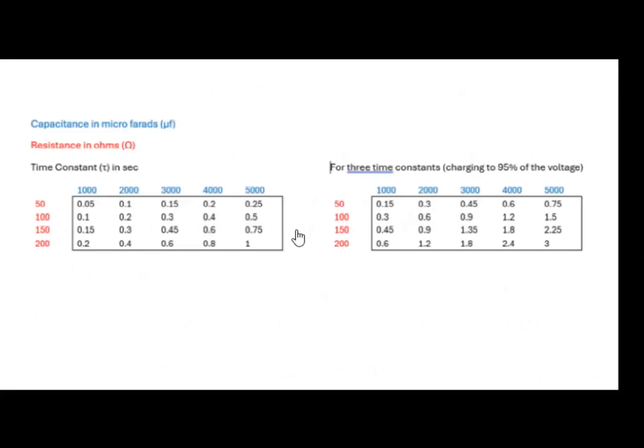So on the left here is a table of various time constants for resistance between 50 and 200 ohms and capacitance between 1000 and 5000 microfarads. For our example, 50 and 3000, we have 0.15. On this side we have the table of wait times of three times the time constant, which goes to 95 percent of the value. As you can see for our example, you should wait for about a half of a second.